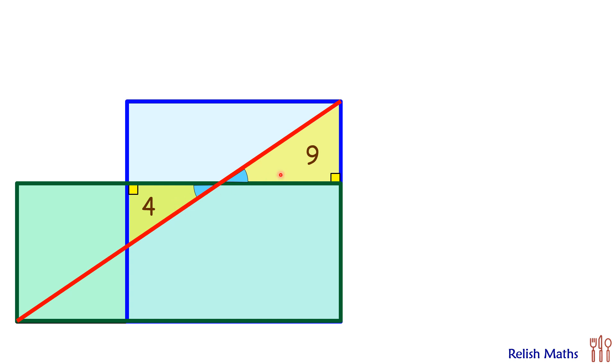So for these two triangles, the ratio of sides will be 2 is to 3. So if this triangle's sides are a and b, then correspondingly for this triangle, this side will be 3/2 a and this side will be 3/2 b.